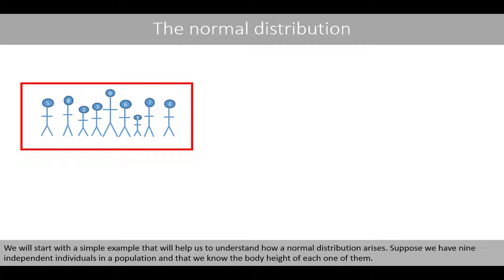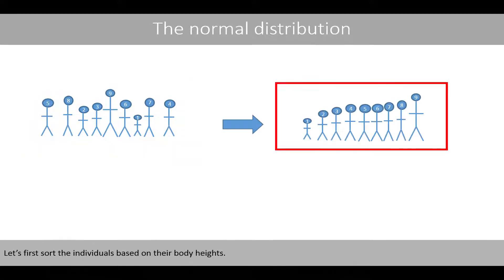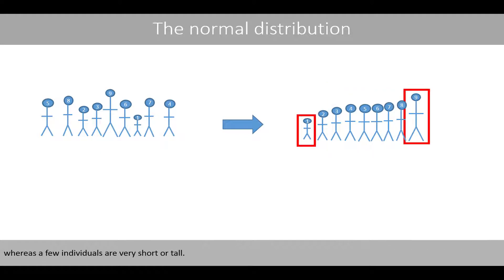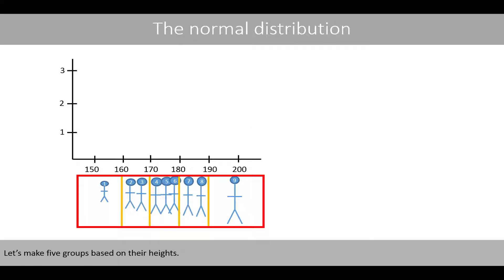Suppose we have 9 independent individuals in a population, and we know the body height of each one of them. Let's first sort the individuals based on their body heights. We see that most individuals have about the same height, whereas a few individuals are very short or very tall.